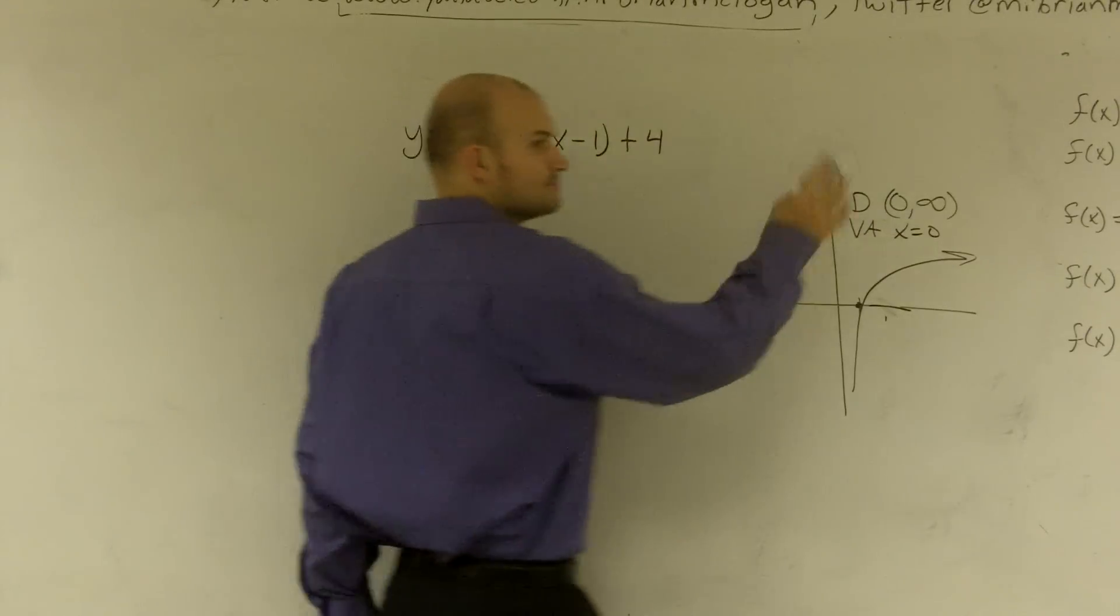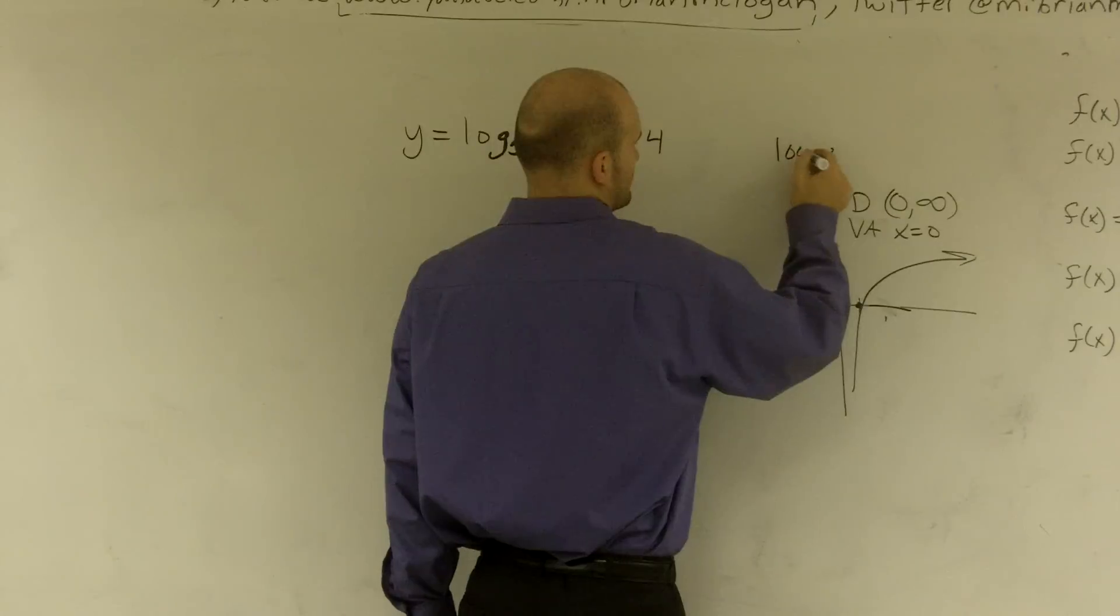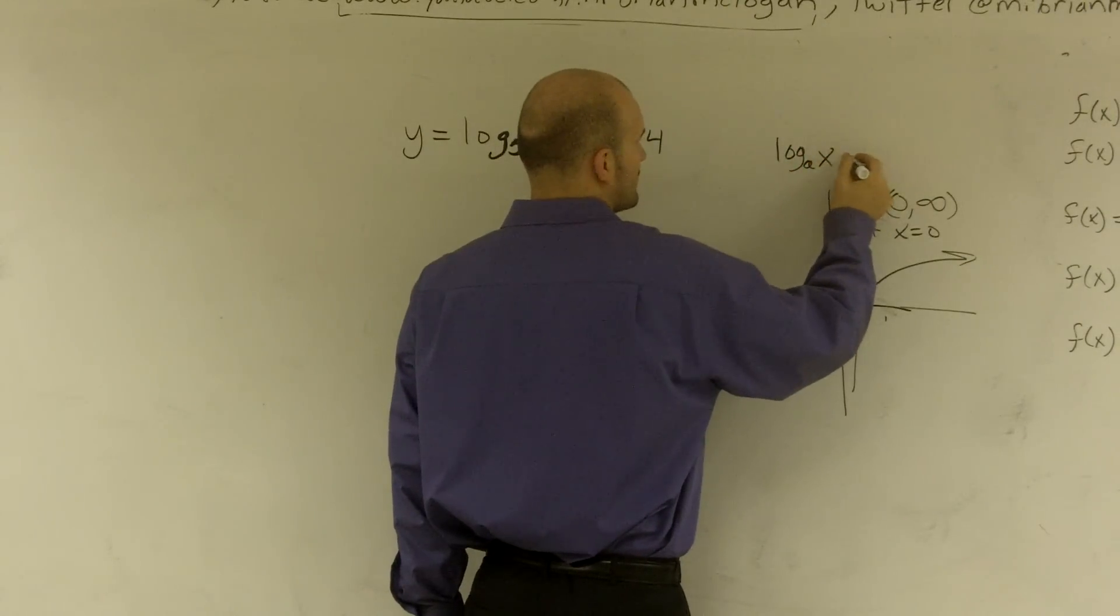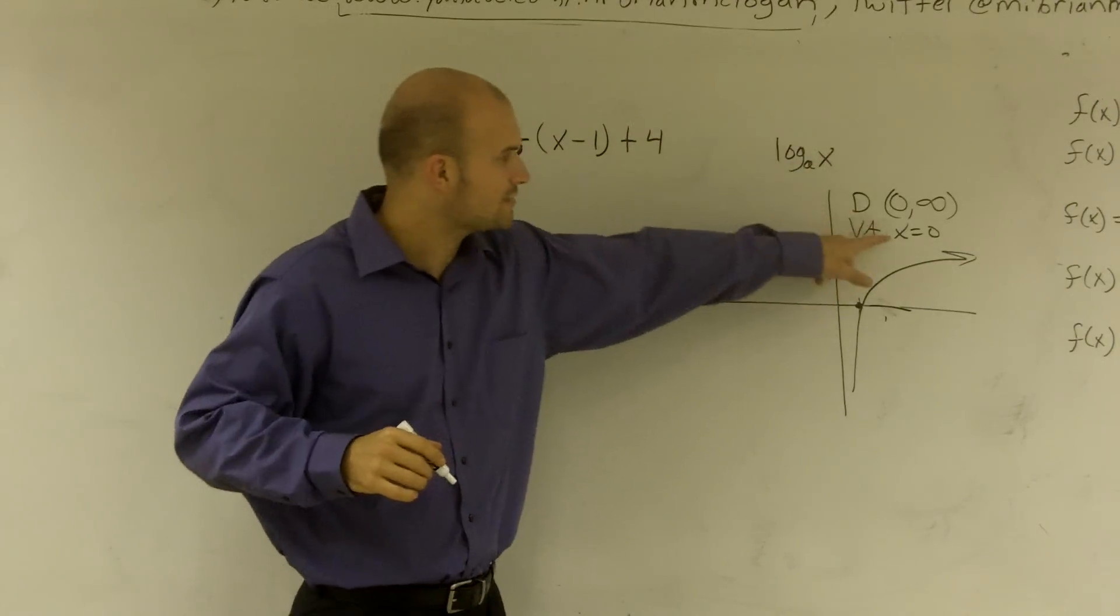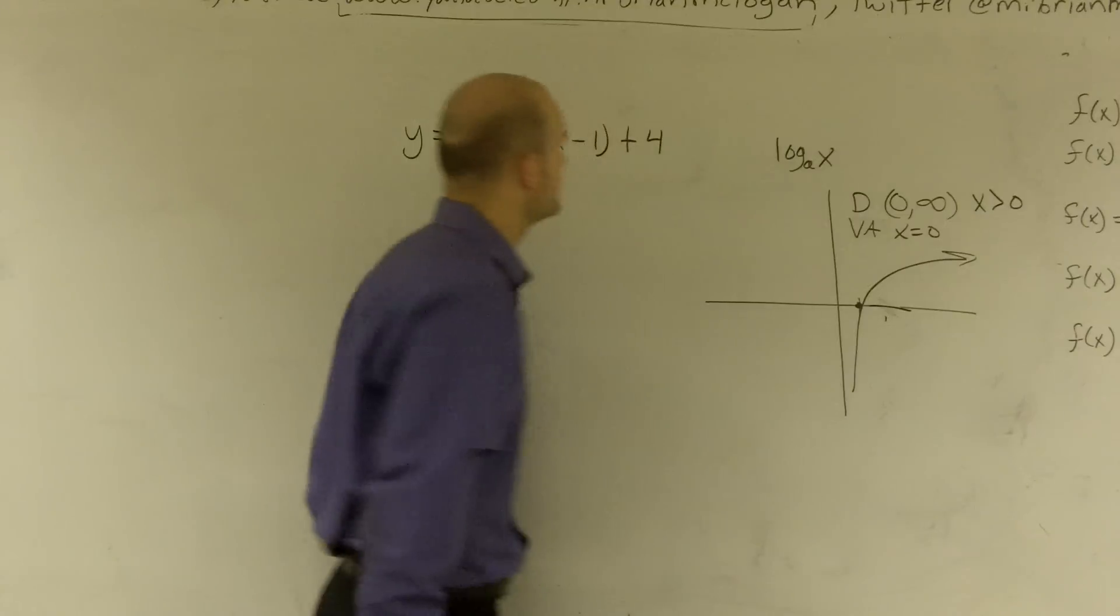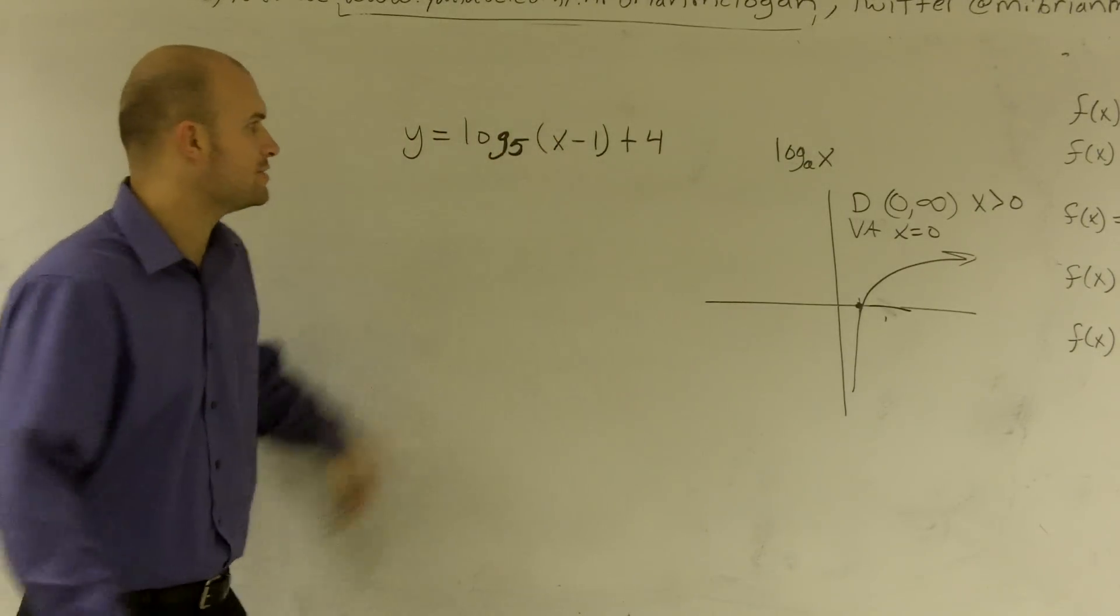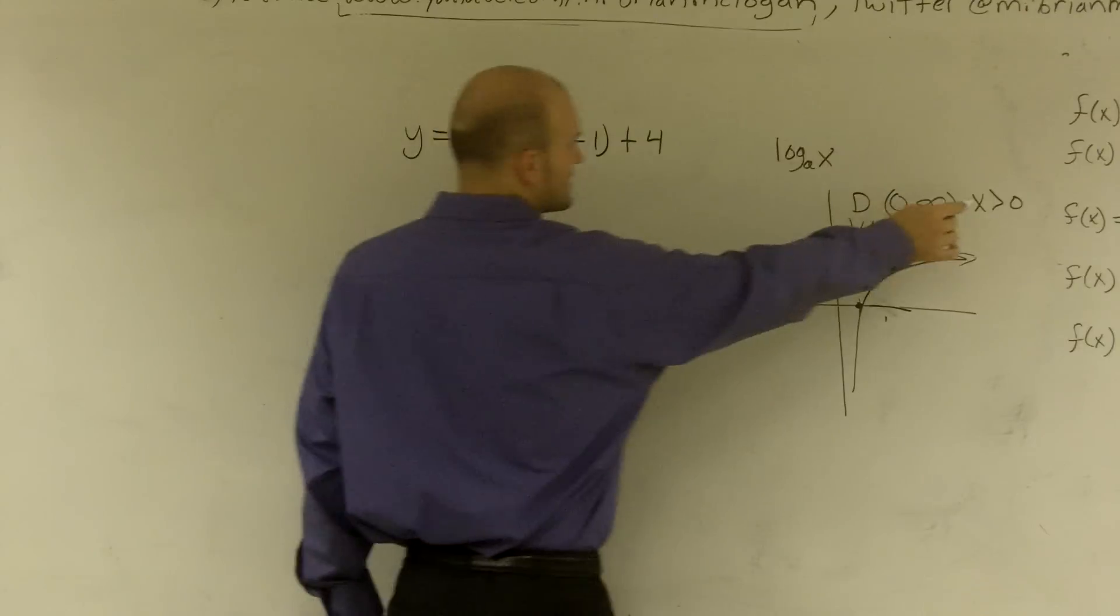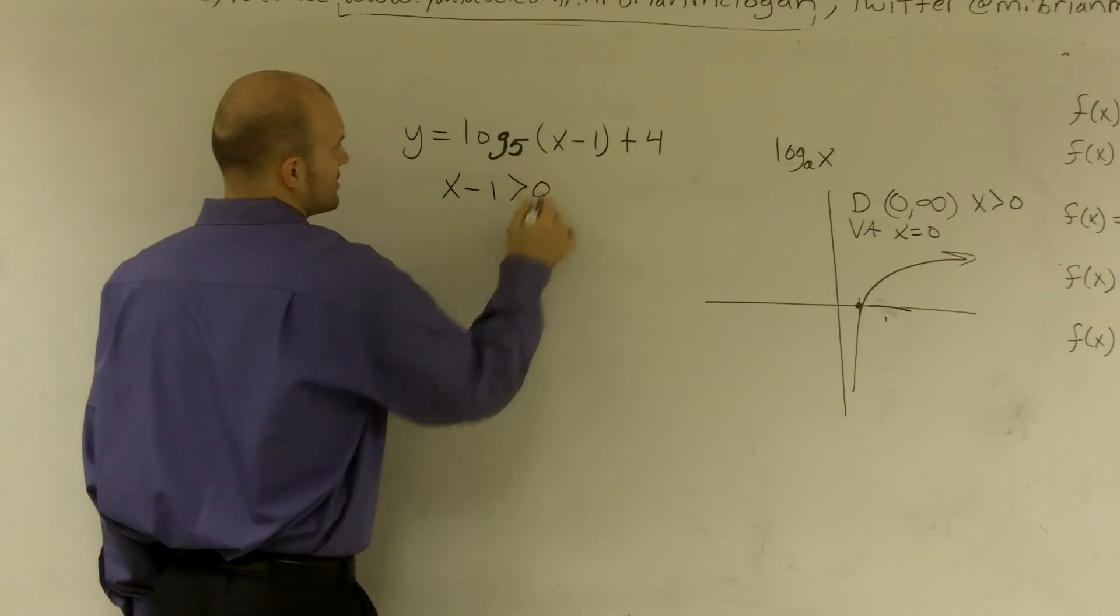That was when you had log base a of x as the original function. You notice the vertical asymptote is x equals 0, and the domain was x is greater than 0. So if I'm making changes to what's inside my function, to find my new domain, instead of saying x is greater than 0, I can say x minus 1 is greater than 0.